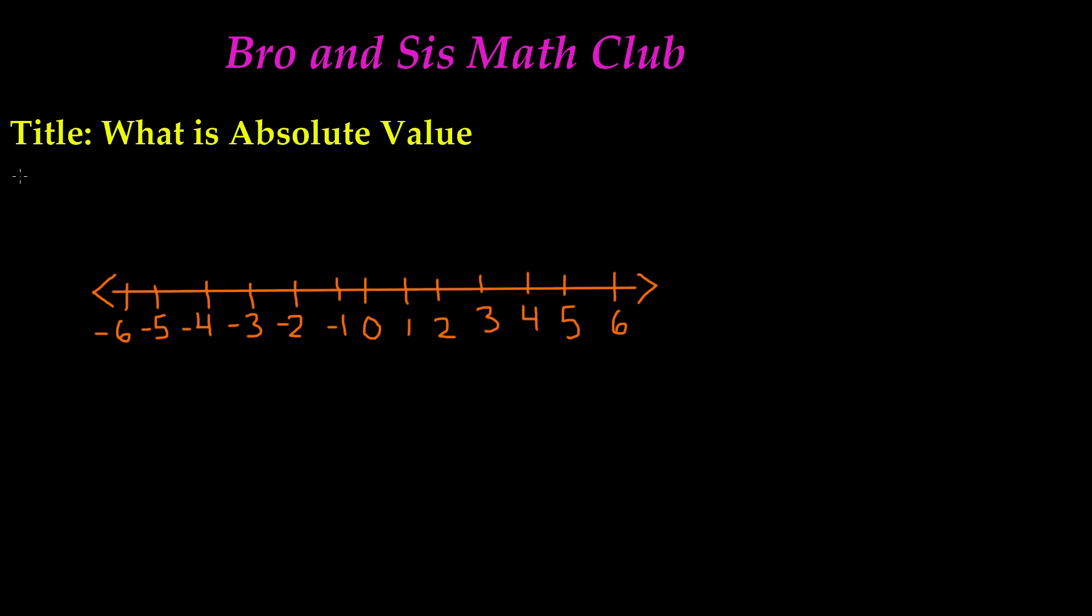Remember, the absolute value symbol is just two straight lines, and you put the number in between them. Let's say we're trying to find the absolute value of the number 4. We're going to put a dot on the number 4, and then count from 4 all the way back to 0.